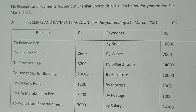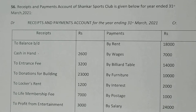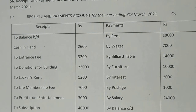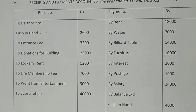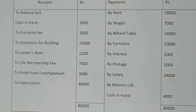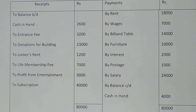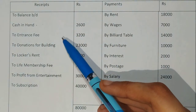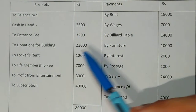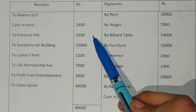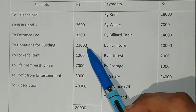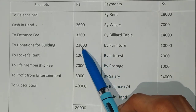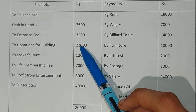The receipt and payment account of Shankar Sports Club is given for 31st March 2021. First of all, let's see what items are given in the receipt and payment account and which we are going to take in the income and expenditure account. Balance carried down and brought down will be used in the balance sheet, and entrance fees will also be noted.